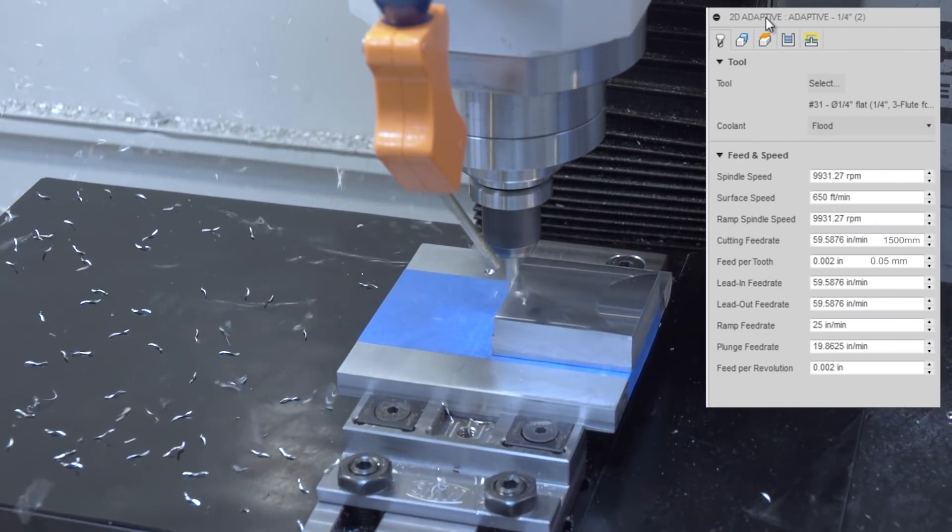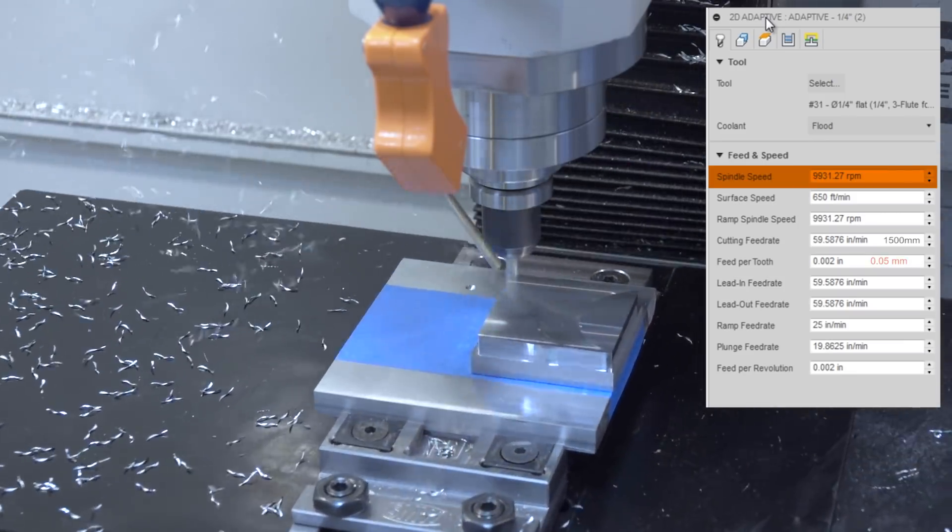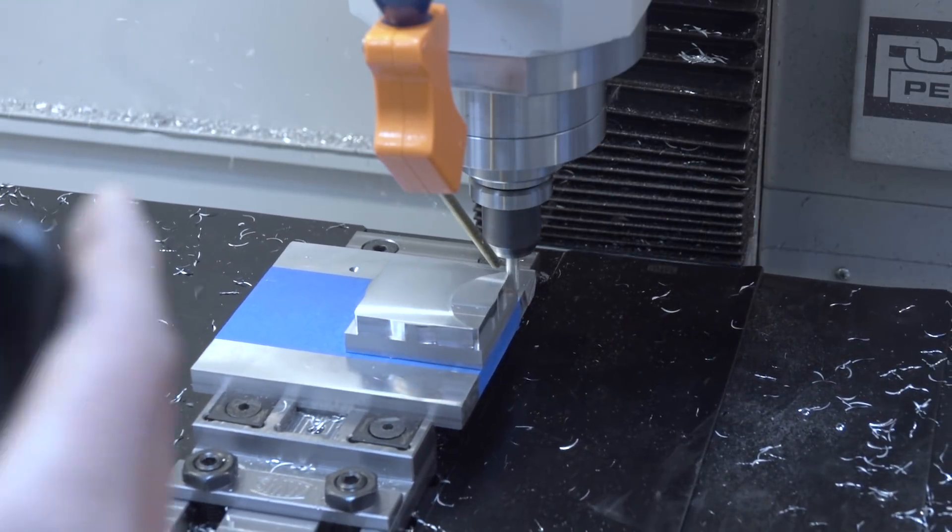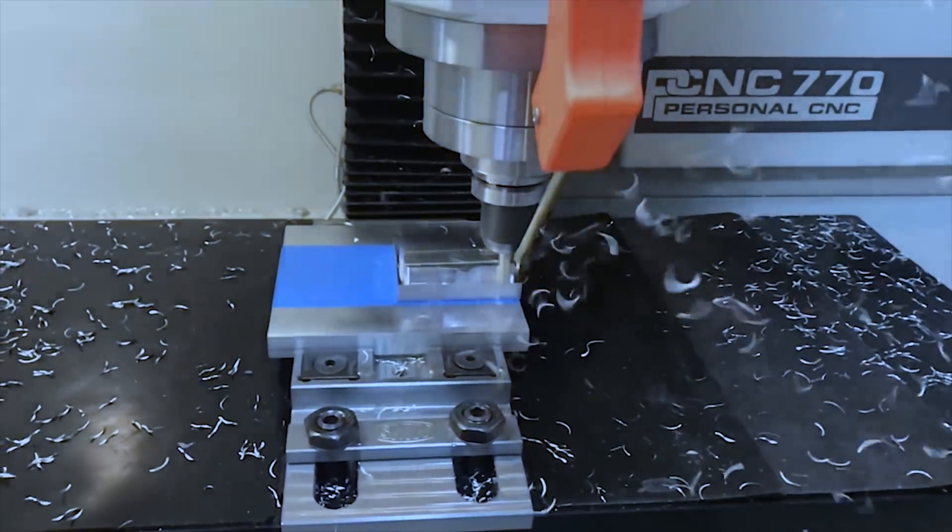And seeing the Tormach 770 with super glue, with this short end mill at 10,000 RPMs and 0.007 inch feed per tooth, which is about 60 inches a minute. And look at the chip coming off it. It's just awesome. It just makes me happy.